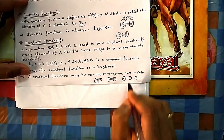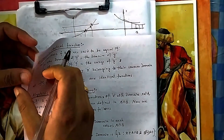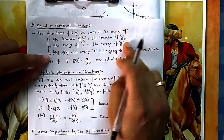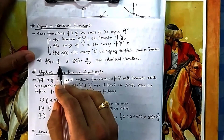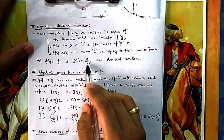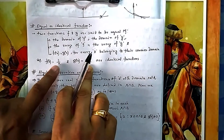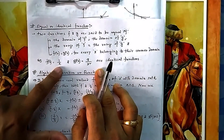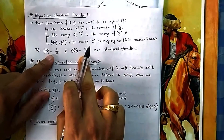Note that 'identical' and 'identity' are different. Two functions are said to be equal or identical if their domains are the same, their ranges are the same, and their outputs are the same for every x in the common domain. For example, f(x) = 1/x and g(x) = x/x² have the same domain (all real numbers except 0) and same output, so they are identical functions.